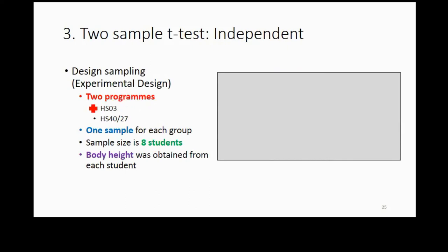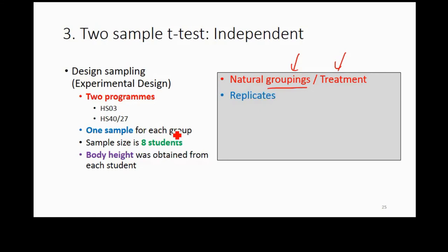As a guideline for beginners, make sure you don't miss any important information when describing your experimental or sampling design. For example, mentioning two programs means you are comparing two treatments or two natural groupings. Saying one sample per group means you have one replicate per population for that treatment or group. You should also describe the specific sampling method used — this is more specific to your research context, not just the statistical point of view.